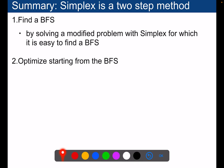To summarize: the simplex algorithm is a two-step method. First, you find a basic feasible solution by solving a modified auxiliary problem with the simplex — for which it is easy to find a basic feasible solution by construction. Once you have it, you start optimizing and pivoting from that basic feasible solution for the initial problem.